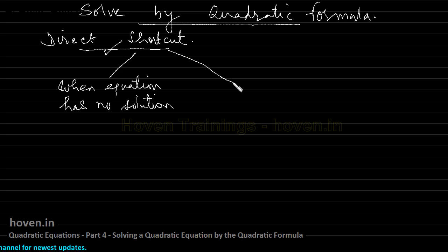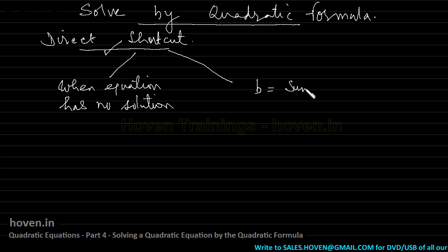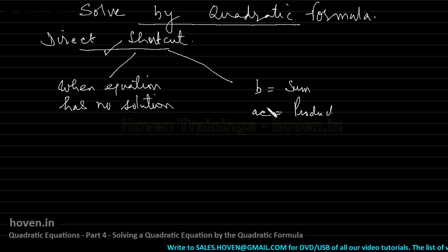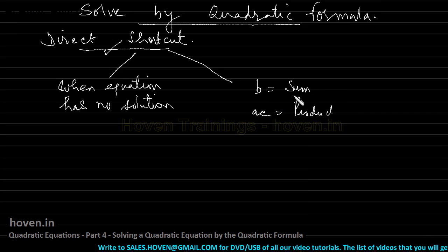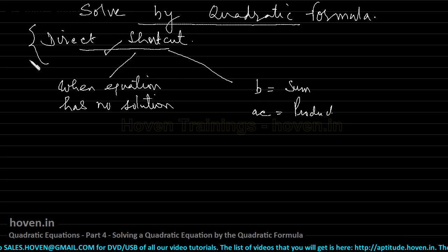The second case of failure is when you are unable to find two numbers whose sum is b and whose product is ac. If you are unable to find two such numbers, the direct shortcut method will not help you at all.